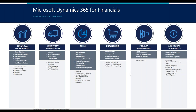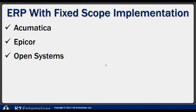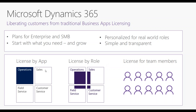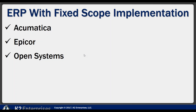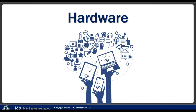Microsoft is going to push a lot around Dynamics 365, with a Tier 2 and Tier 3 offering. The key differentiator is licensing by role or by app. Many vendors doing this type of work also offer fixed-scope implementations on these mid-market and above — Tier 1, Tier 2, Tier 3 — types of offerings.